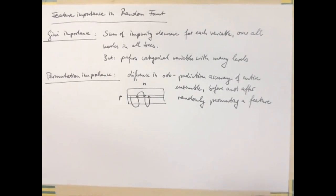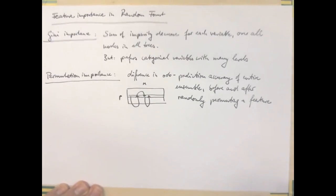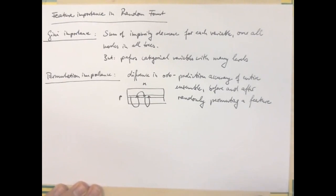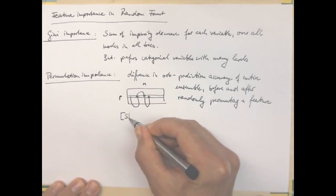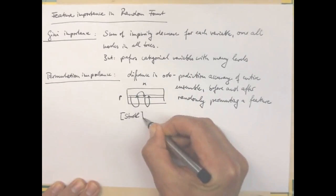Before and after randomly permuting a feature. So this is related to randomization tests. Now this is more expensive but typically also works better than the Gini accuracy. However, it turns out this also has a problem, namely with highly correlated data. And this was described in a series of papers by Caroline Strobel.